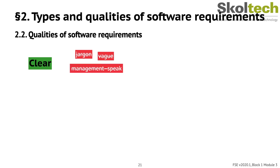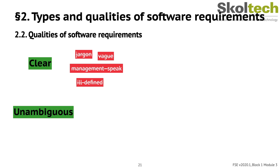To be clear, requirements cannot be vague or ill-defined. Each requirement must state in concrete, no-nonsense terms exactly what it requires. In addition to being clear and concrete, a requirement must be unambiguous. If a requirement is worded so that you can't tell what it requires, you can't build a system to satisfy it.